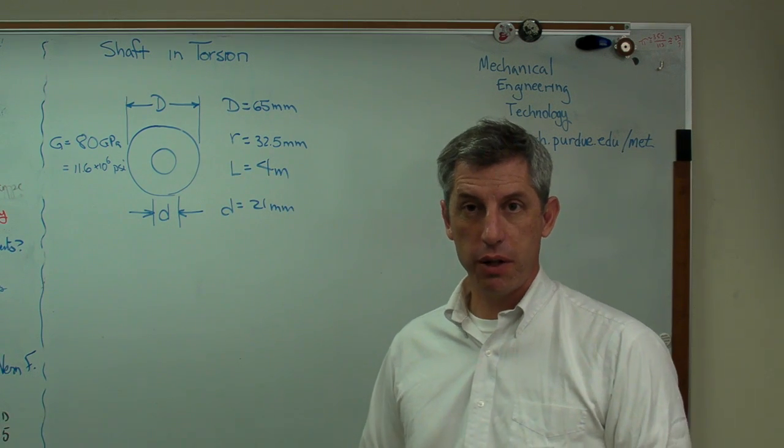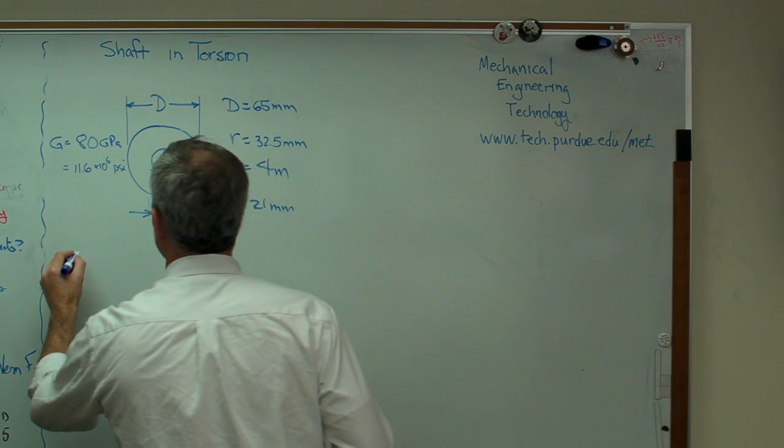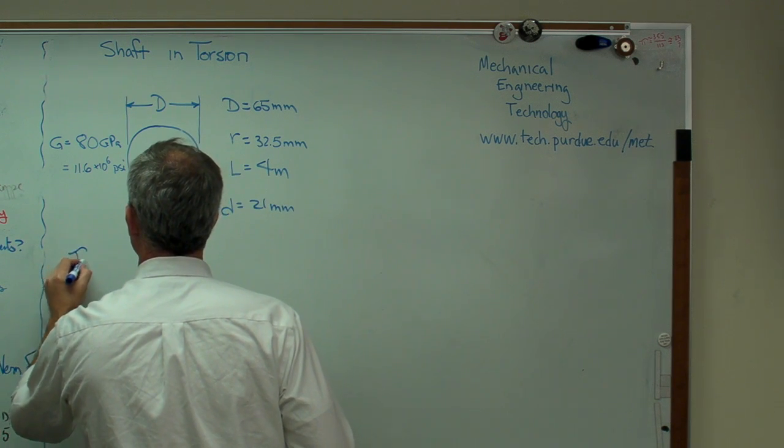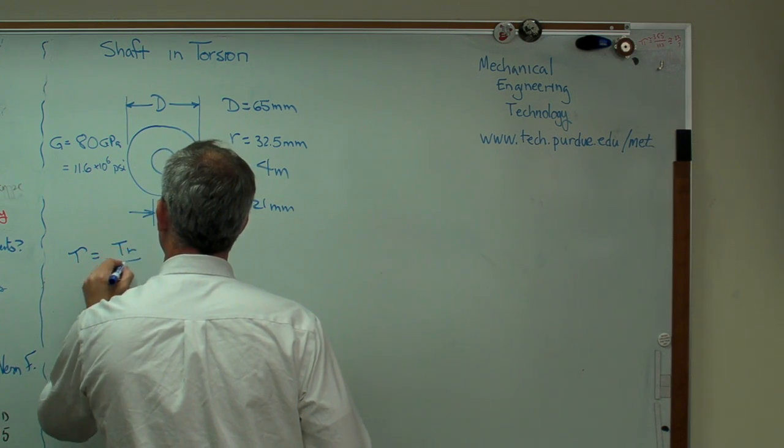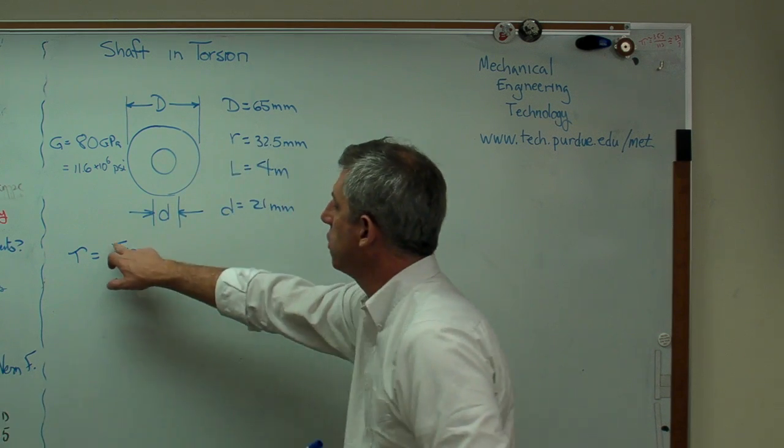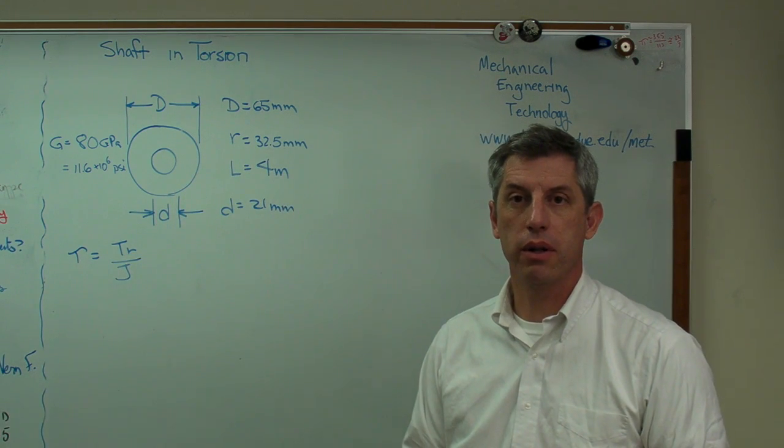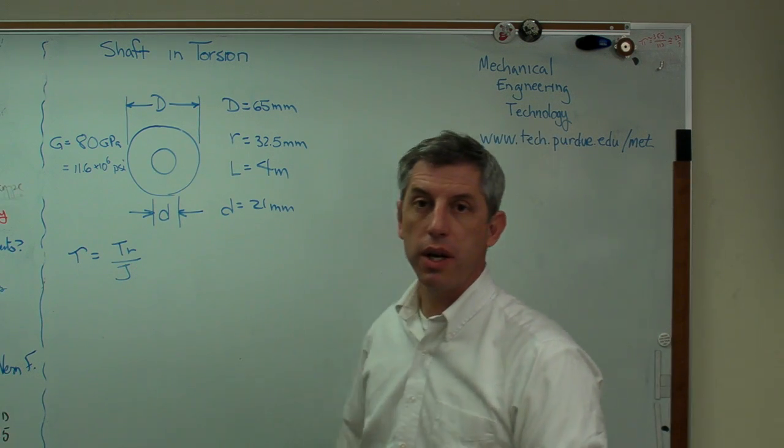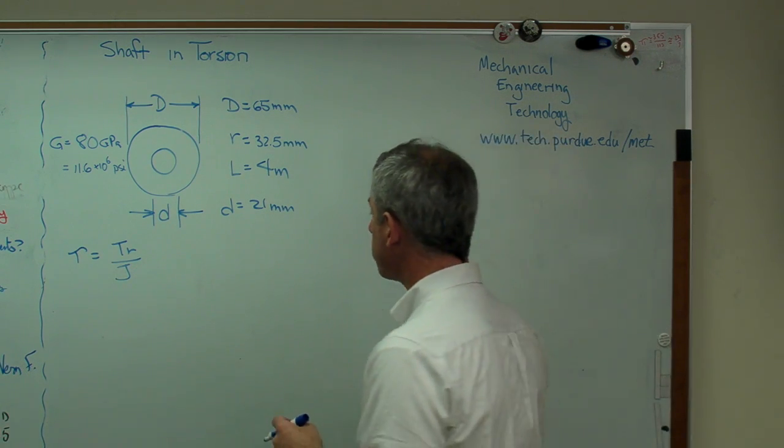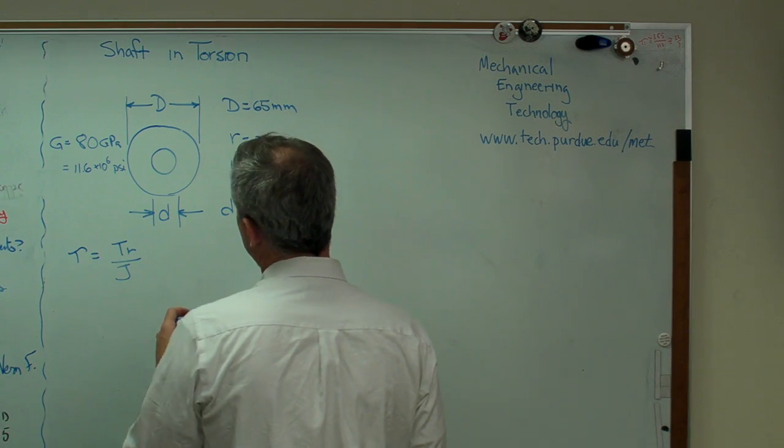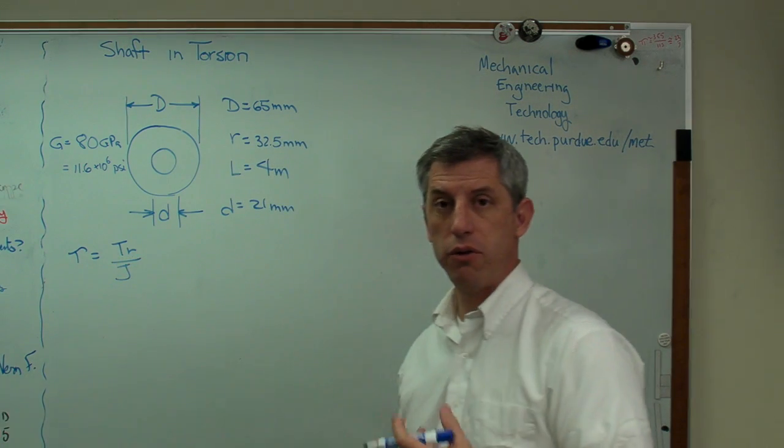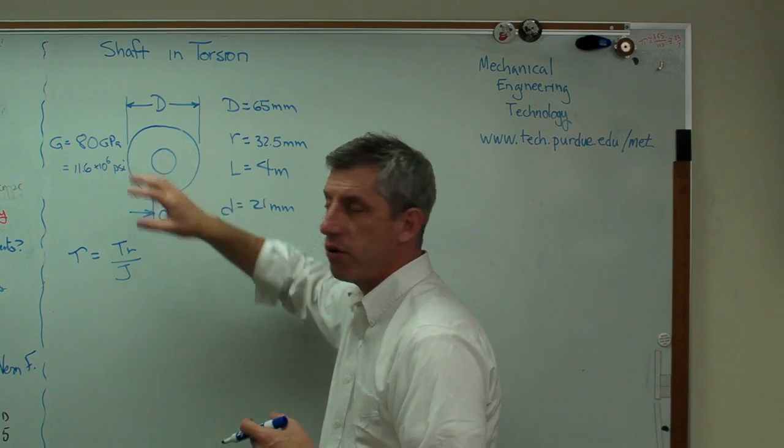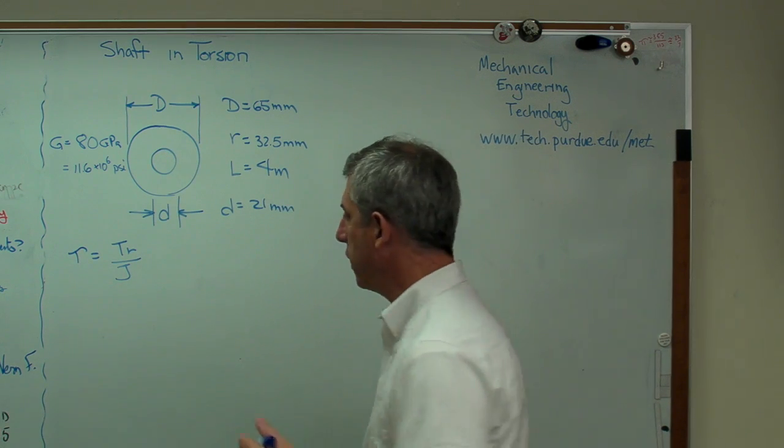Now, the expression for twist, or for shear stress, equals TR over J. Where T is torque, R is the radius at which we're figuring shear stress, and J is a polar moment of inertia. So we're going to need to know how to figure out torque. Well, shafts transmit torque and power, depending on how you look at it.